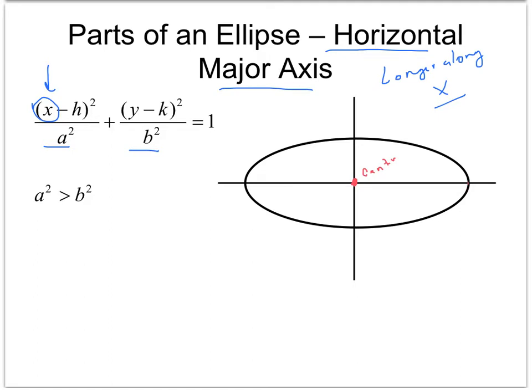And this guy right here and this guy right here are the vertices. So that's a vertex, and this is a vertex. The distance from the center to one of these is A.